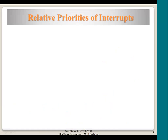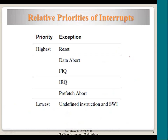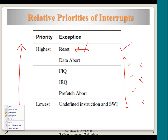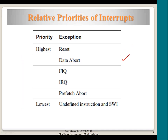Let us recall the key things learned in previous discussions — the relative priorities of interrupts. Reset is given the topmost priority because when the system has to restart, we do not want it taking more time. Whatever is being executed, when reset is given, the processor should stop and start executing the reset handler. That is why reset is given the highest priority.